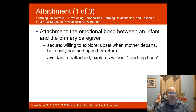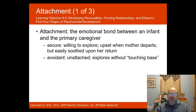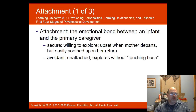Attachment is the emotional bond between the infant and caregiver. Secure attachment is where the baby is willing to explore, gets upset when the mother departs, but is easily soothed upon return. Avoidant attachment is where the child explores without touching base with the caregiver. Mary Ainsworth developed these attachment types in 1985 through the stranger situation study, where a stranger came into the room and researchers observed how the baby reacted.